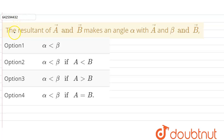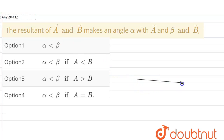In the given question, we have been asked that the resultant of A and B makes an angle alpha with A and beta with B. We have to determine the relation between alpha and beta when the relation between the magnitudes of vector A and vector B is varied.